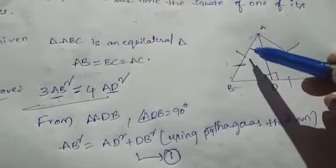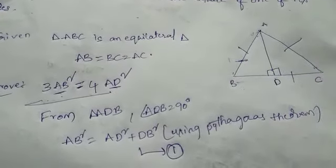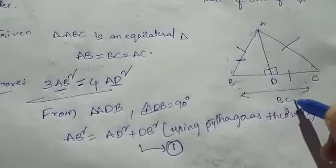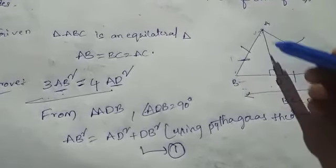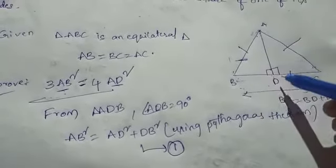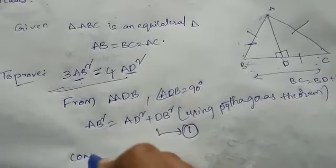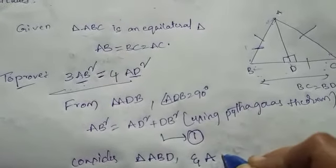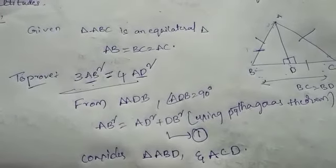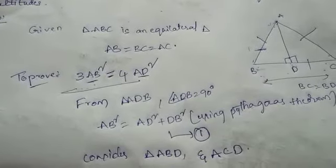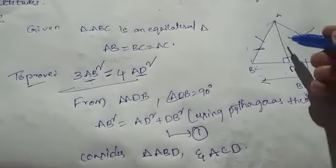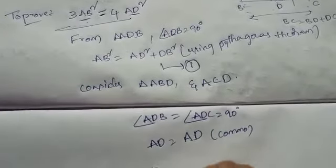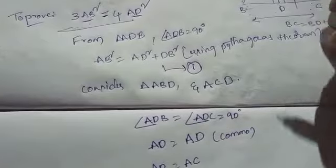See this figure. AD is the altitude of triangle ABC. BC equal to BD plus DC. Here we have two right angle triangles, ADB and ADC. Consider triangle ABD and triangle ACD. Angle ADB equal to angle ADC, each 90 degrees. AD equal to AD, this is a common side. And AB equal to AC, since in an equilateral triangle all sides are equal.